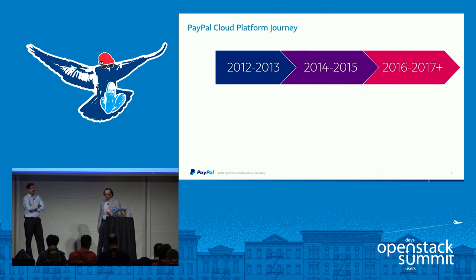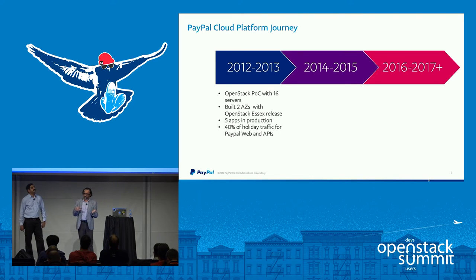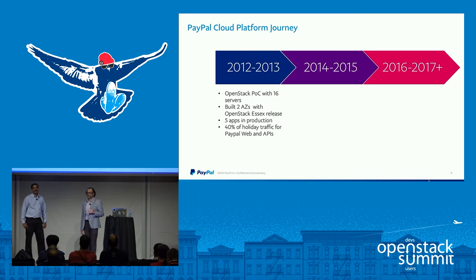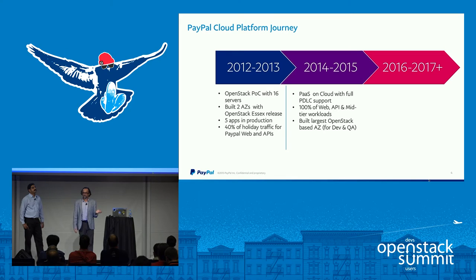A quick overview of our journey: in 2012 we started with 16 servers — decom servers that IT was going to throw away. We deployed OpenStack Essex; this was purely a POC. By the time we were done in 2013, we were actually taking 40% of our holiday traffic on an OpenStack cloud with our web and API tier deployed there. In 2014 and 2015 — remembering we were still part of eBay until mid-2015 — all of our platform-as-a-service layer, which used to run on bare metal, started deploying on OpenStack cloud, with complete PDLC support.